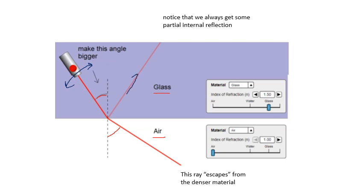Notice that we get a little bit. We always get a little bit of reflection. When a wave hits a boundary, some of it always reflects. We always get, in this case, partial internal, because it's inside the glass, reflection. A little bit of partial internal reflection. But most of the light escapes. Most of the light gets out of the glass. This ray escapes from the denser material.